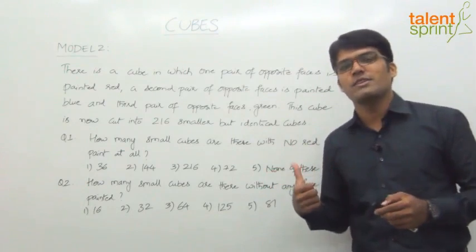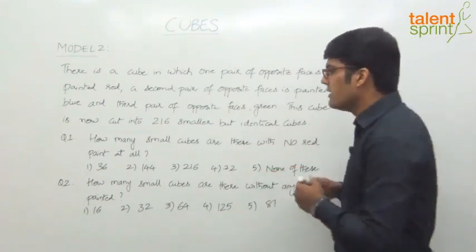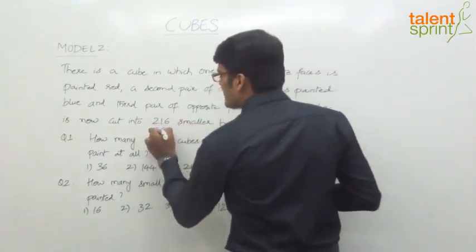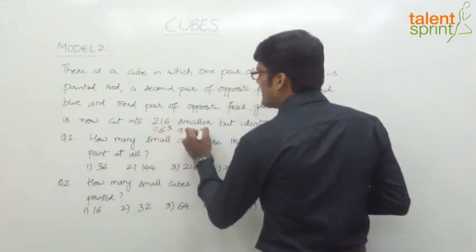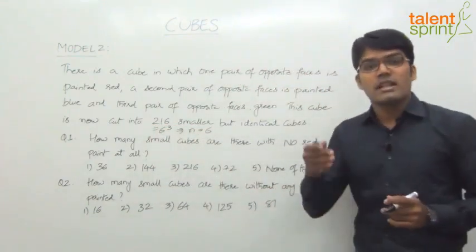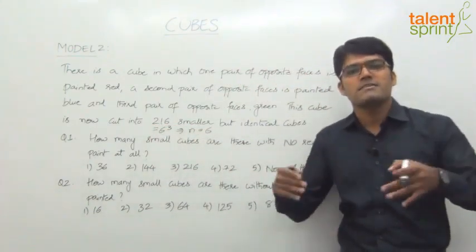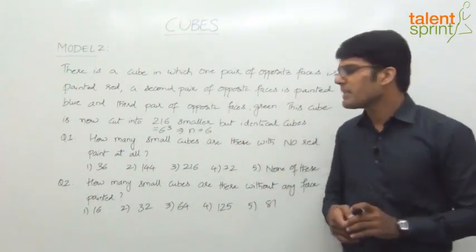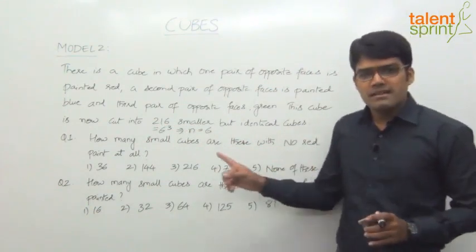By now you should know the value of n. It is 6 because 216 equals 6 cubed. So n is equal to 6, and the number of cuts will be 5. Five cuts means it gives us 6 portions. Now there are different questions here.